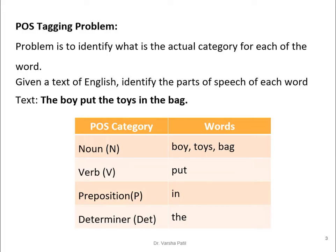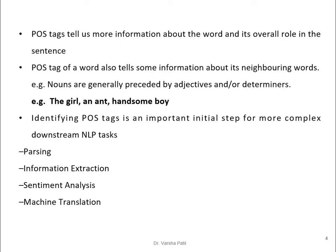For example, take the statement: 'The ball put the toys in the bag.' Here, words like 'boys', 'toys', and 'bag' come under the category of noun; 'put' is a verb; 'in' is a preposition; and 'the' is a determiner. POS tags tell us more information about a word and its overall role in the sentence.